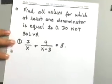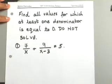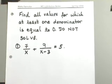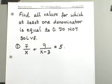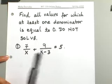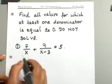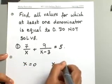Let's start with a simple example. What we are doing is finding all the values for which at least one of the denominators is equal to zero. We are not solving this equation — we're only trying to find the values for which the denominator will be zero. You have two denominators here: x and x minus three. Take each one of these denominators and set it equal to zero.